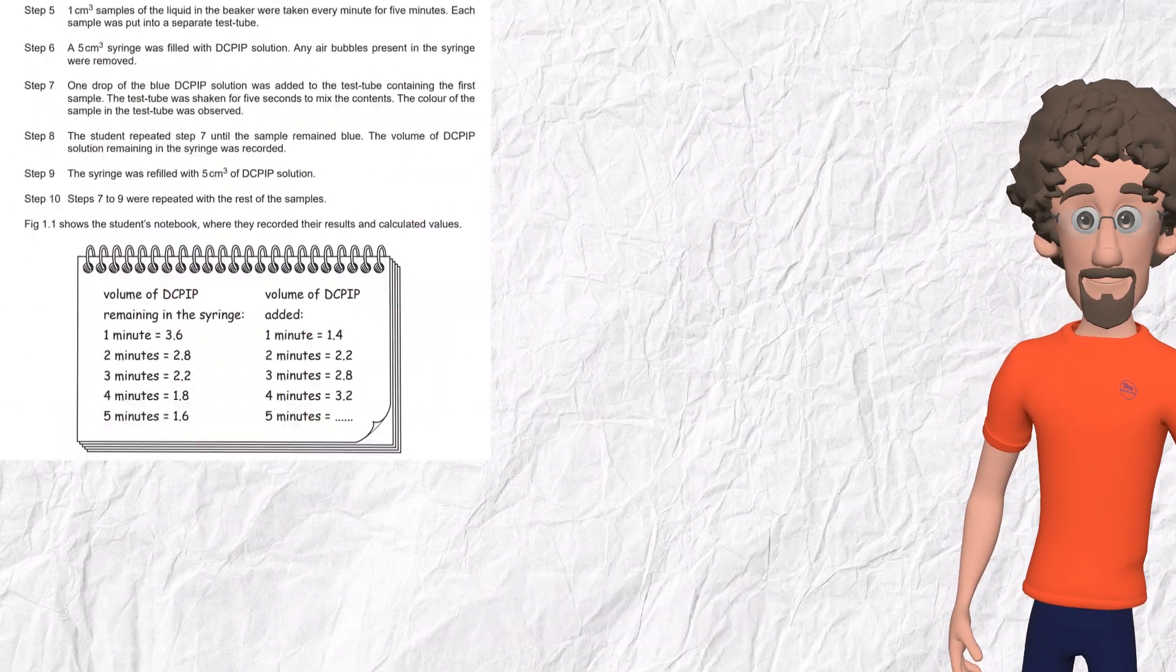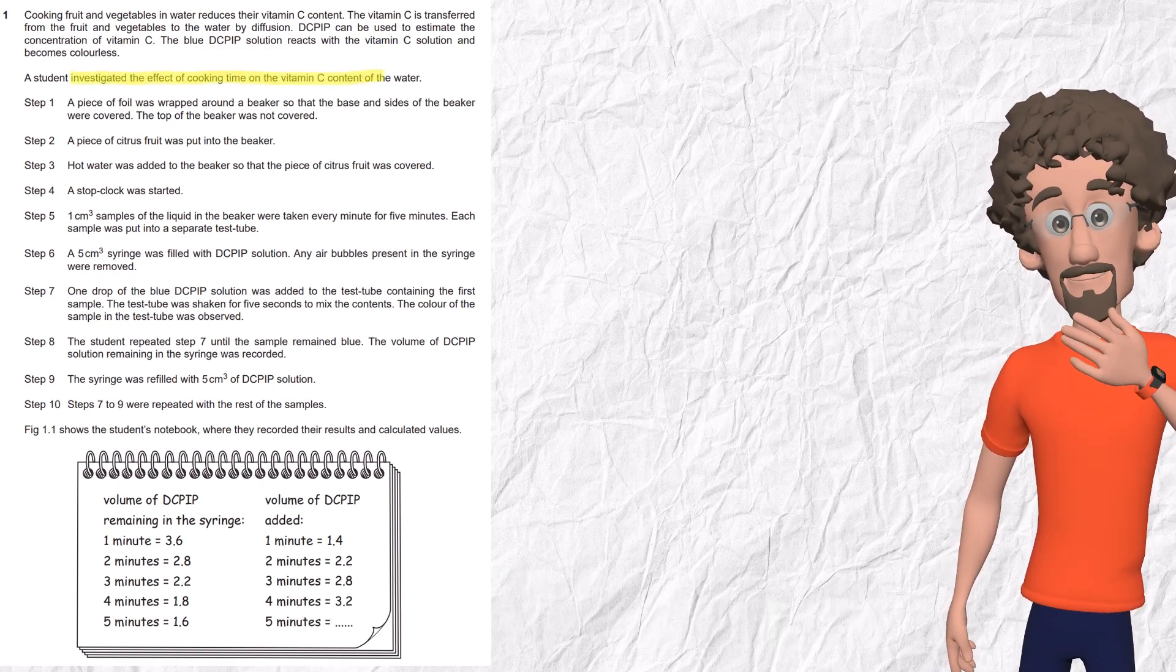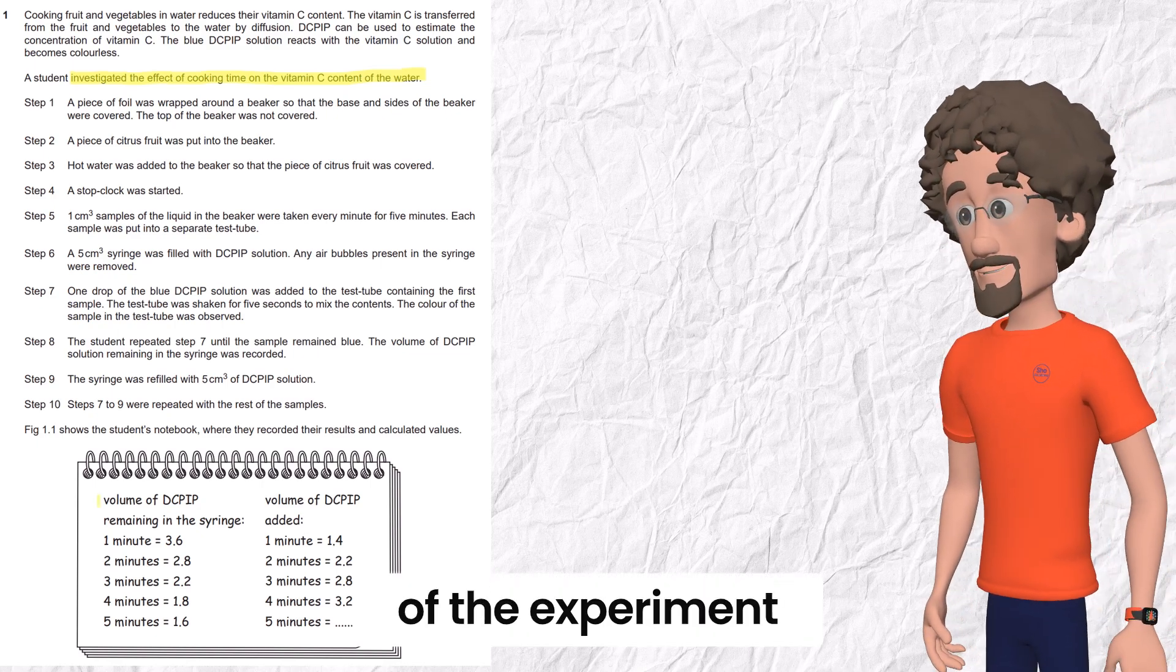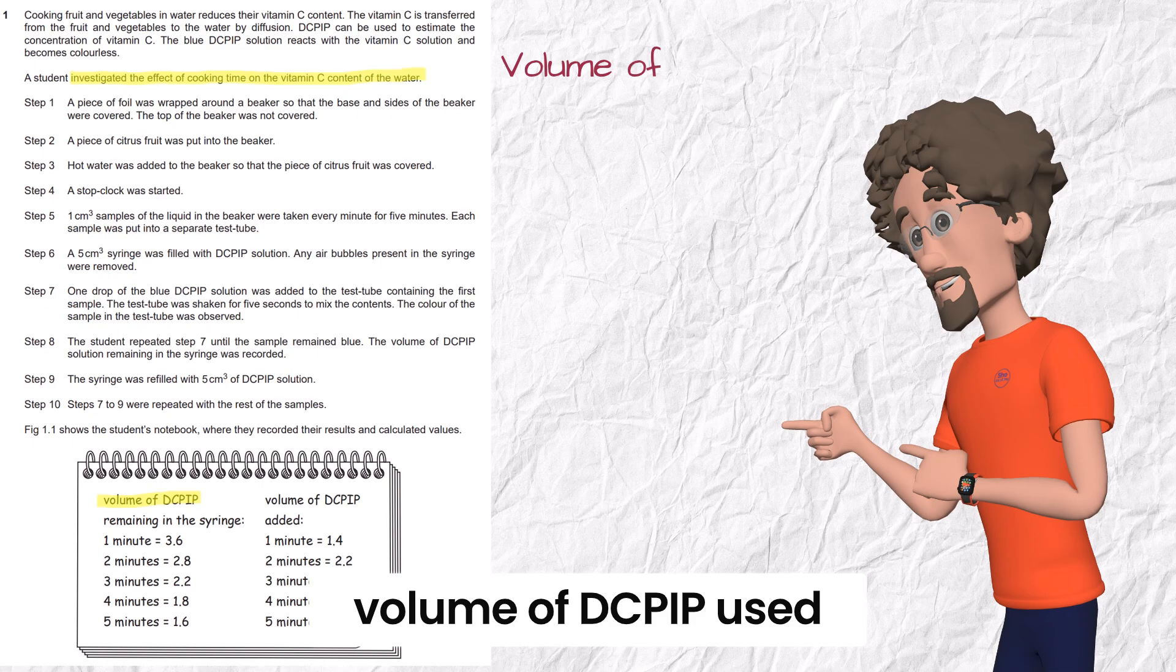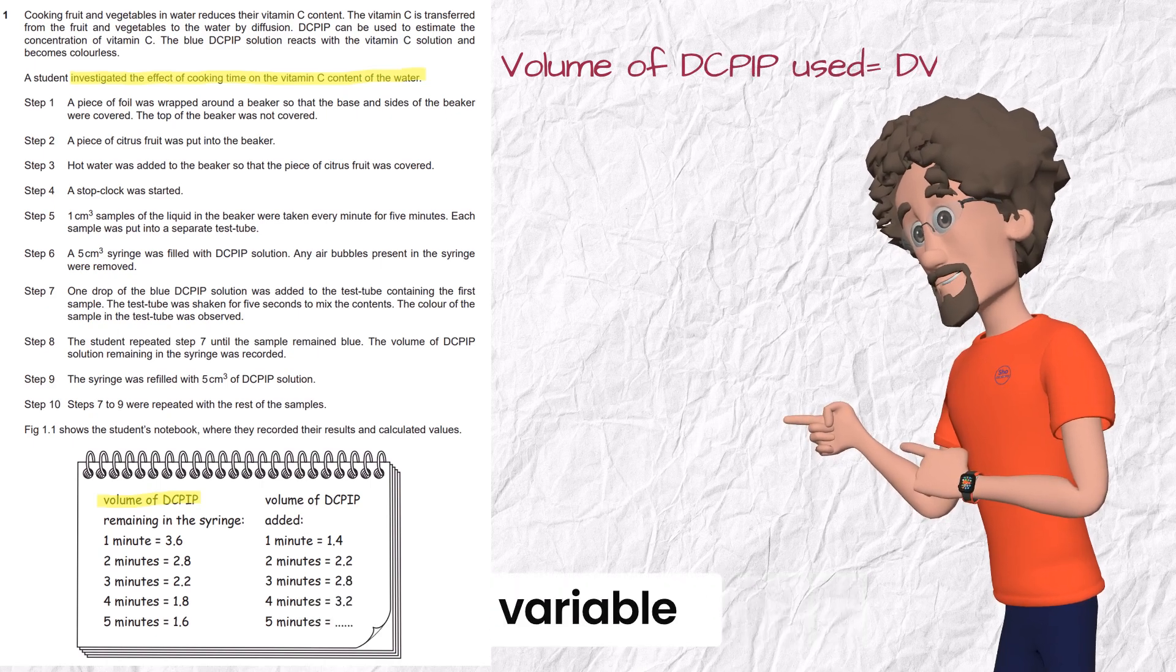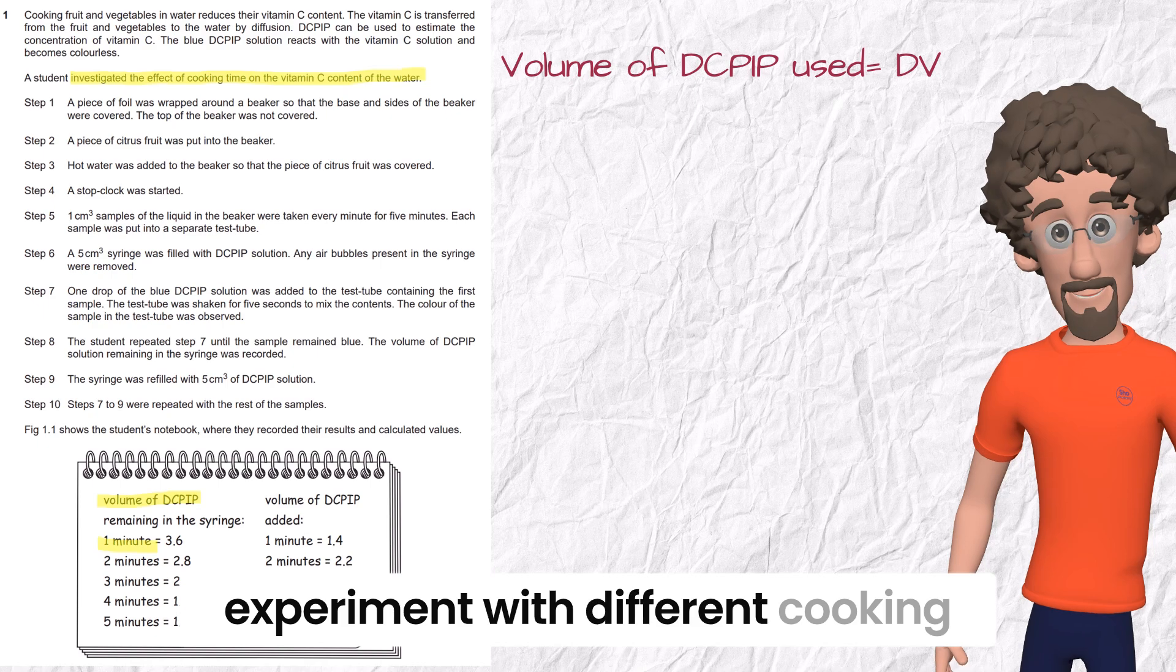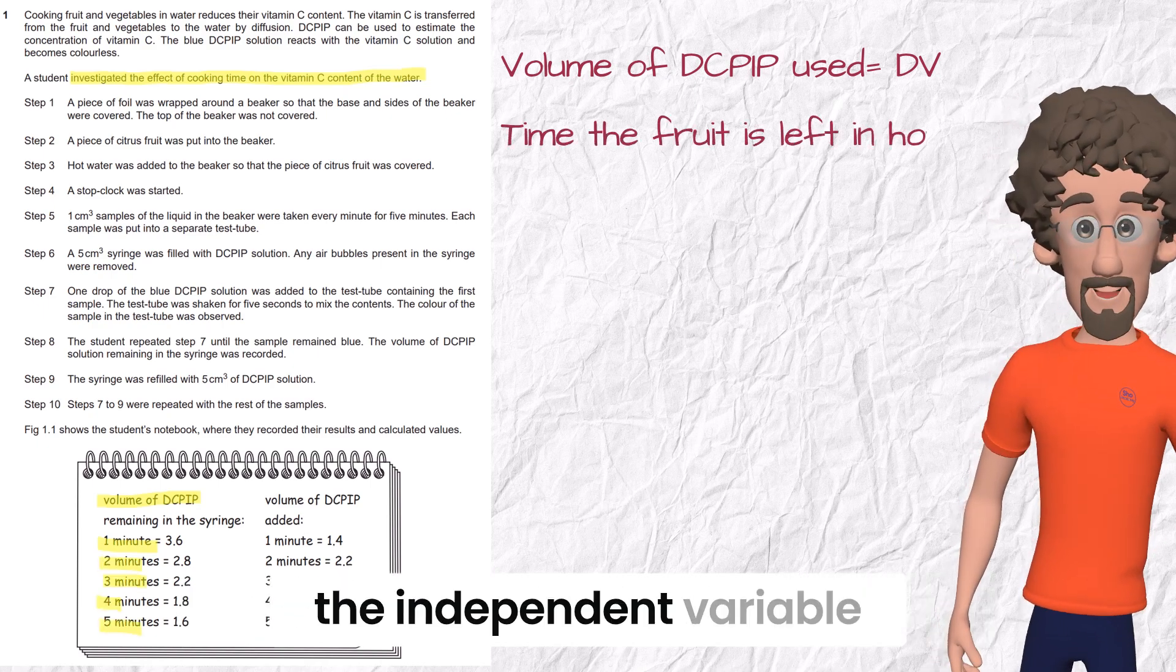Example two: investigate the effect of cooking time on the vitamin C content of water. What do I read here? Go to the end of the experiment. The data recorded is volume of DCPIP used. This is the dependent variable. What to feed here? We must feed the experiment with different cooking times, so the time the fruit is left in hot water is the independent variable.